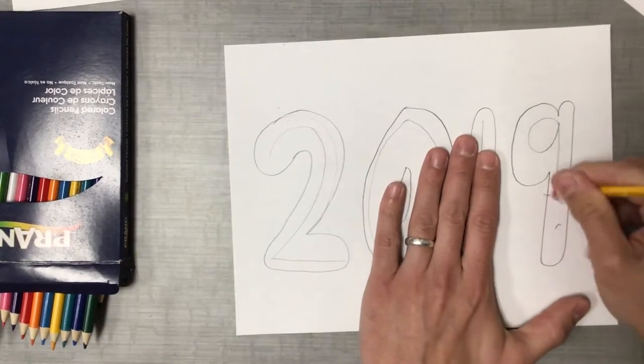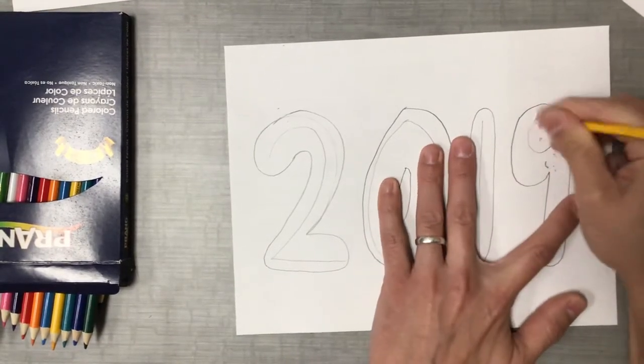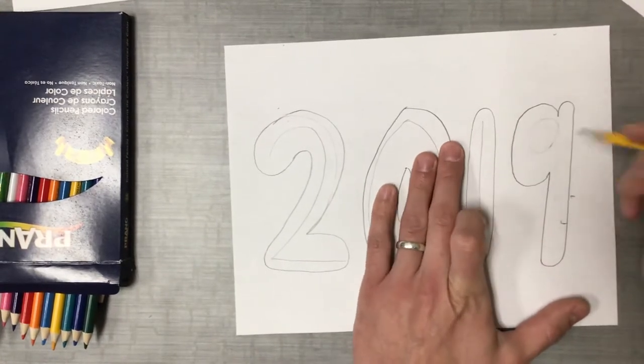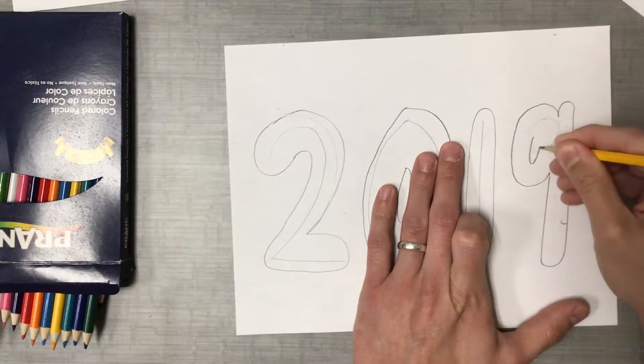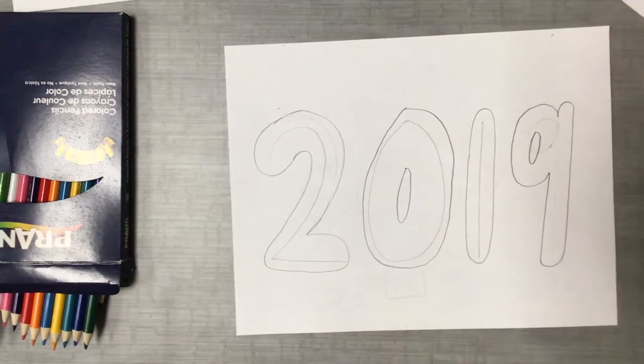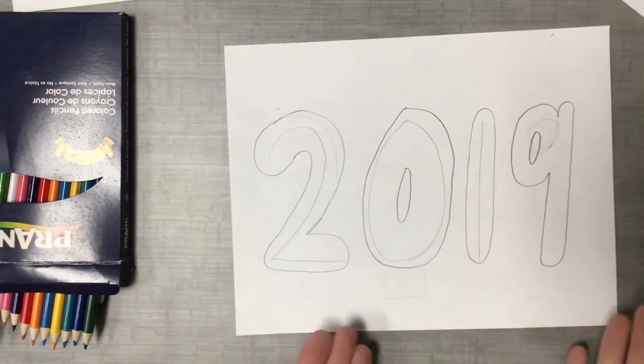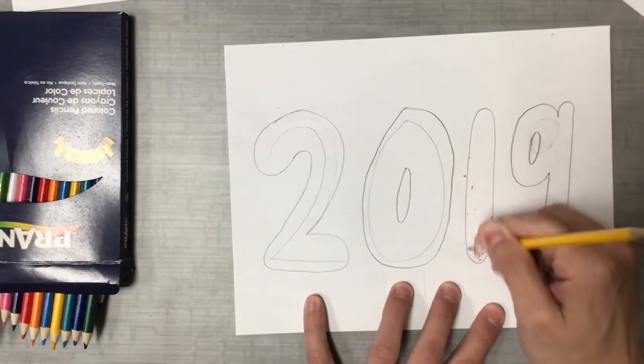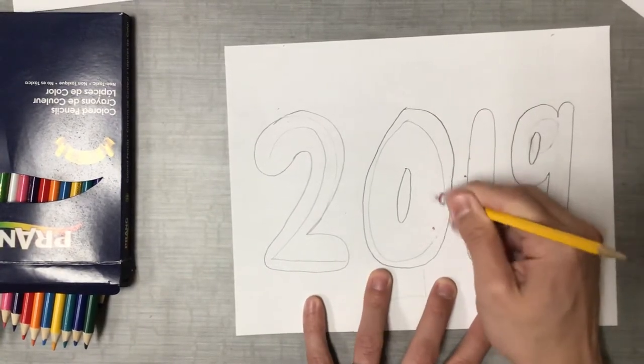For the 9 I'm going to go ahead and erase that previous number. That way I can put in a nice little oval there. Okay, now that I have my 2019 I'm going to go ahead and erase all those lines that I drew lightly.